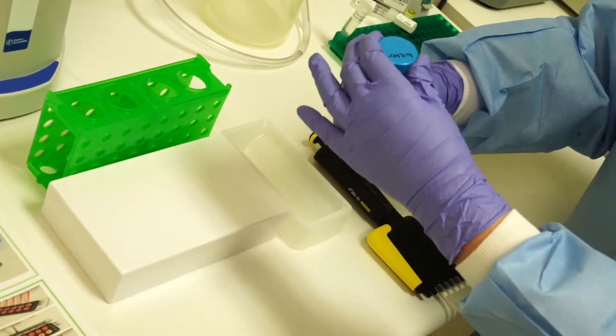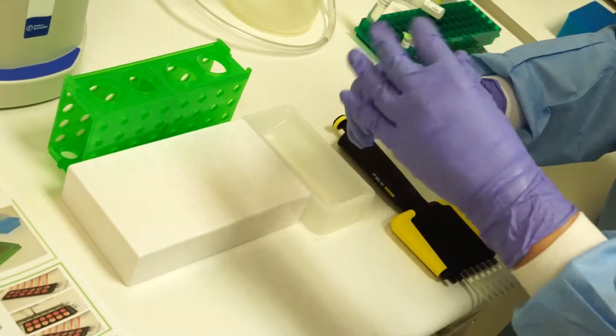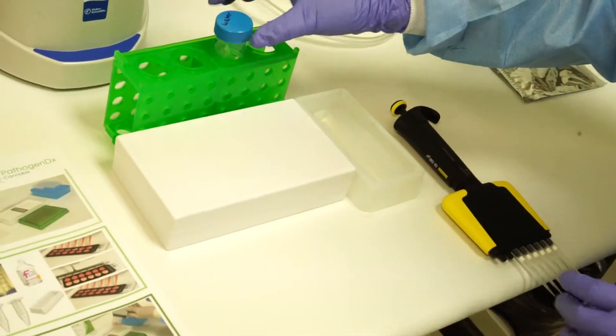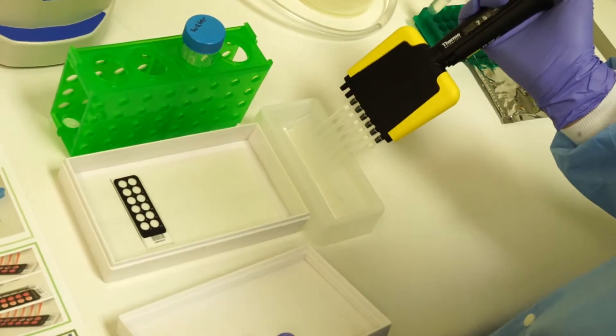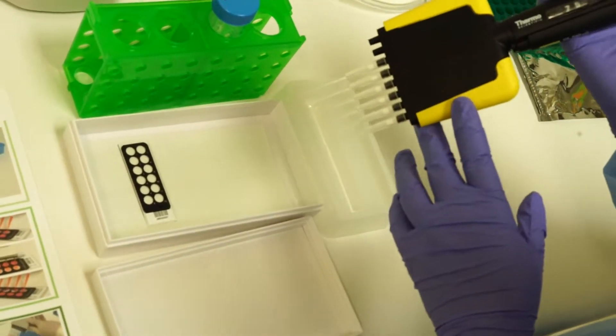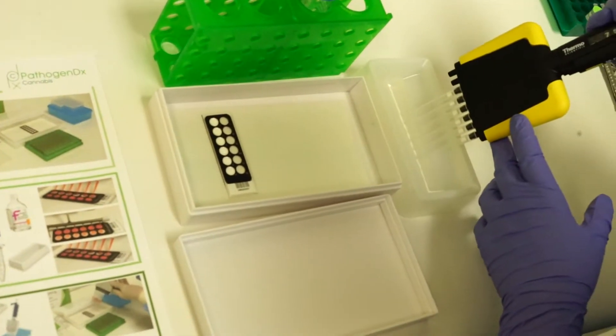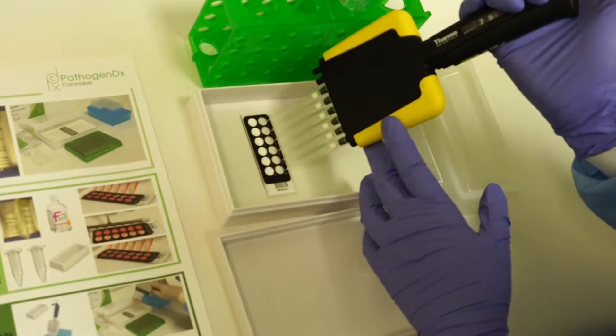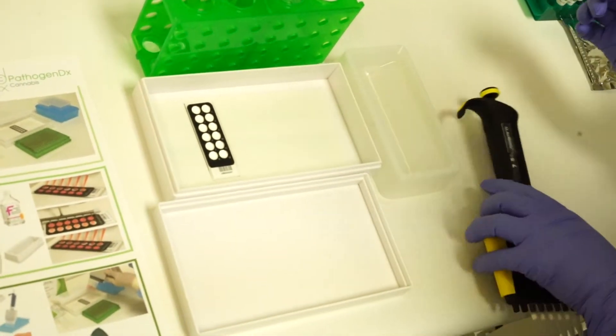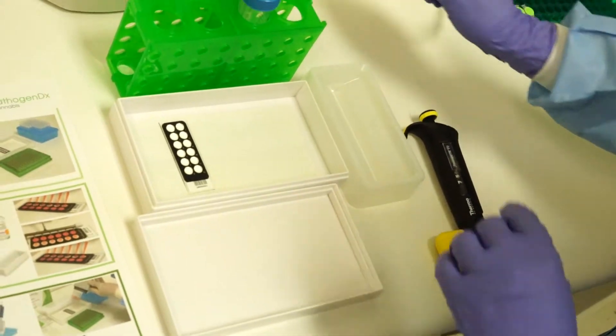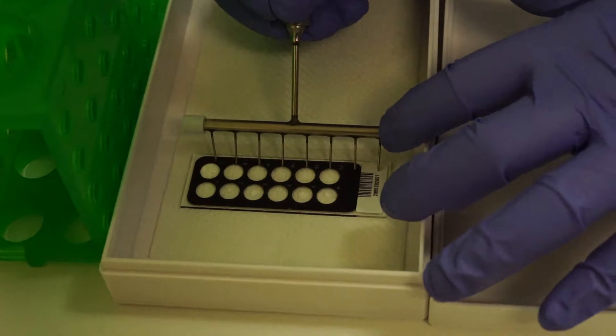When you are ready to begin the hybridization, pour your molecular biology grade water into a pipette basin. Your pipettor should be set to 75 microliters for the first wash step. Once you have 75 microliters, carefully dispense onto the slide. Make sure that no contact is made between the surface of the slide and the end of the pipette tip. After you've dispensed your first 75 microliters, aspirate and repeat, allowing the water to sit for five minutes.